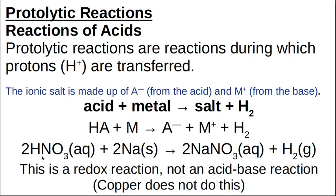For a specific example: if you mix nitric acid and sodium metal, it would be violent. The metal turns into an ion — sodium nitrate — and hydrogen gas is released. This is almost certainly going to be violently exothermic and will catch fire. So this is a redox reaction and not technically an acid-base reaction, but it is a general reaction of an acid.